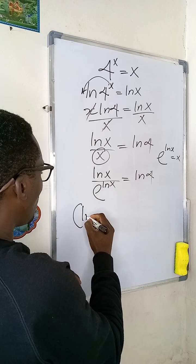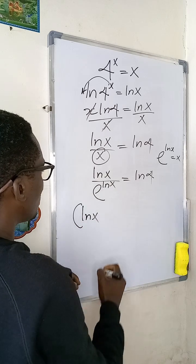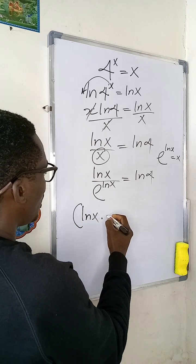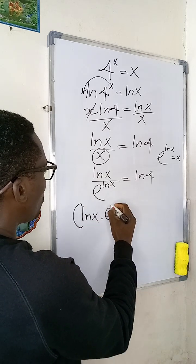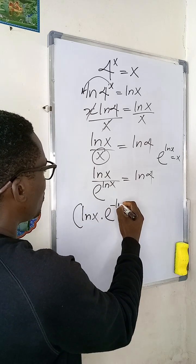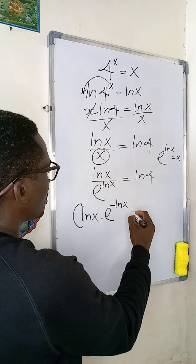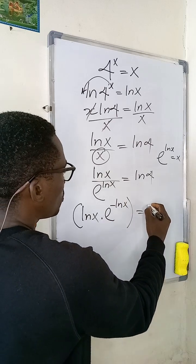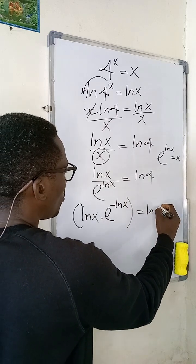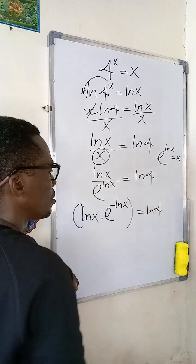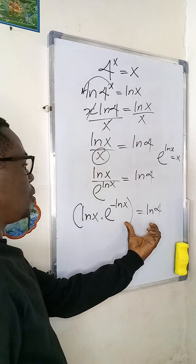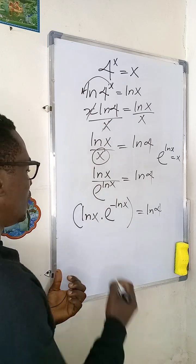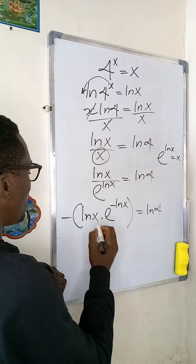I can simplify this further to give me ln(x) multiplied by e to the power of negative ln(x), equal to ln(4). Now look at this expression carefully.